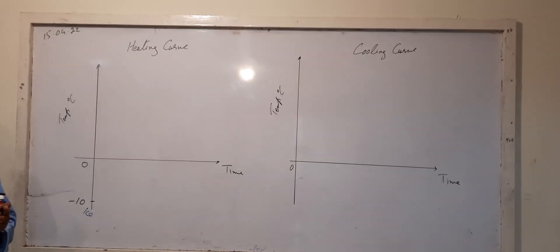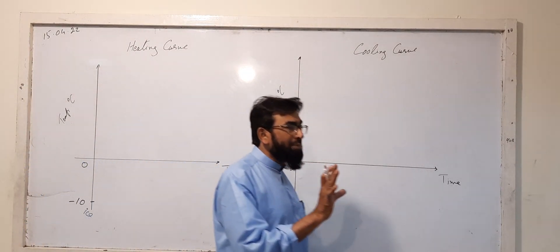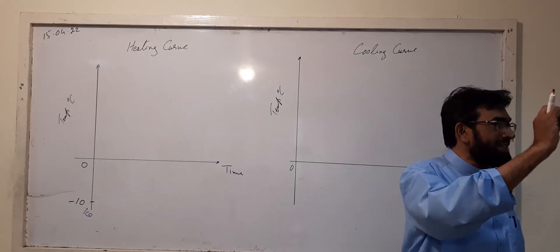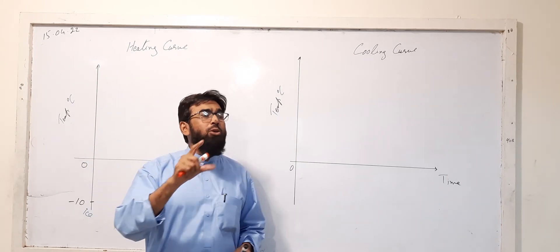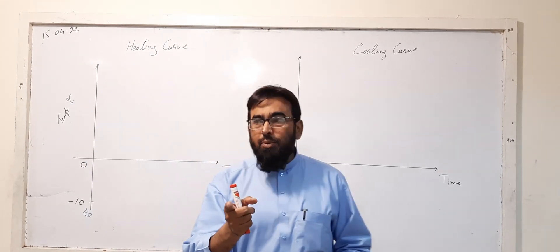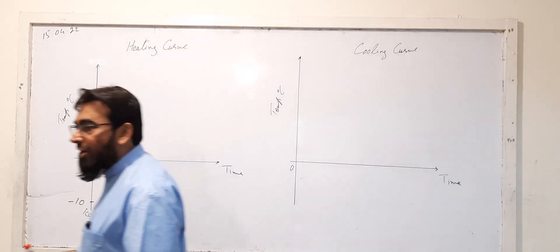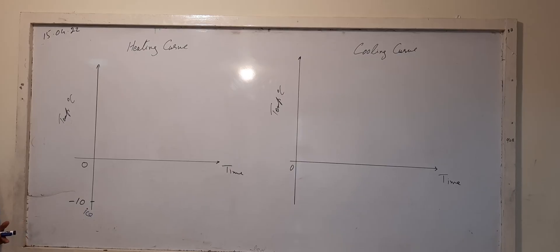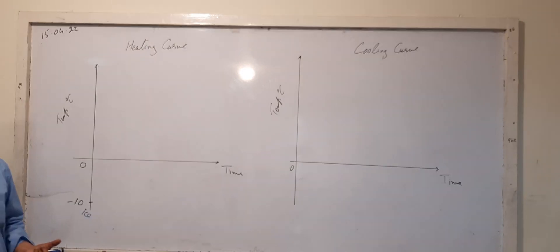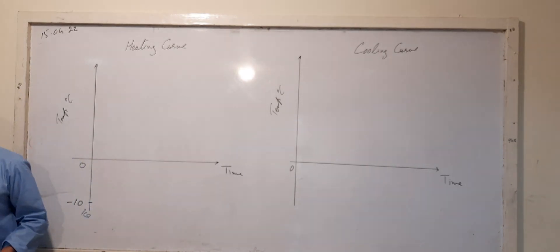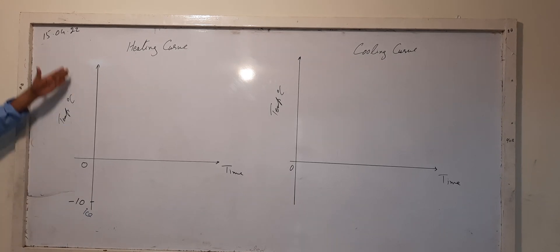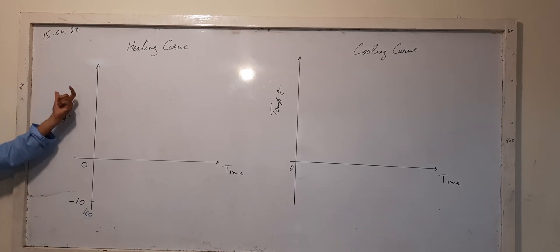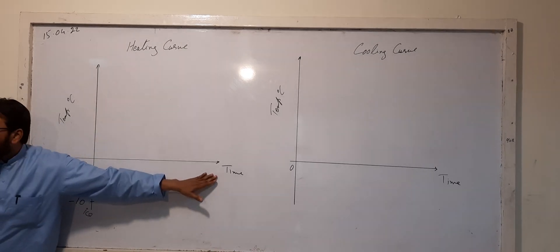The ice will not melt unless its temperature comes to 0 degree Celsius, because the melting point of ice is 0 degree Celsius. We are talking about pure water and pure ice. We are providing heat to this piece of ice of any given mass. Along the y-axis we are taking temperature and along the x-axis we are taking time.